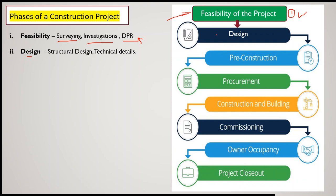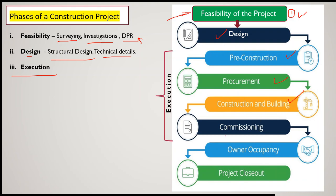The second phase is design — here you carry out structural design, prepare all technical details, float and shortlist tenders. The third and very important phase is execution, which includes pre-construction activities, requirement of material, labor and other resources, actual construction, and finally commissioning of the project when it is almost complete. All these activities come under the execution phase of the project.